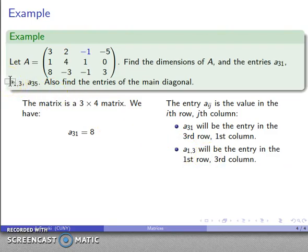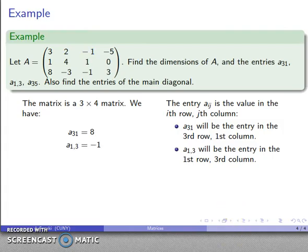Likewise this entry A_13, well here I've split up that location. So this is still first thing is the row, second thing is a column, this is the first row, third column. And so first row is this one, third column over, that gives me the entry negative one. So A_13 is going to have value negative one.